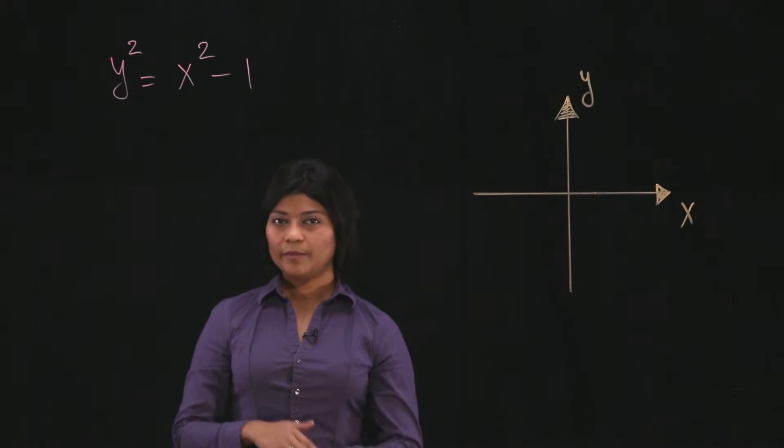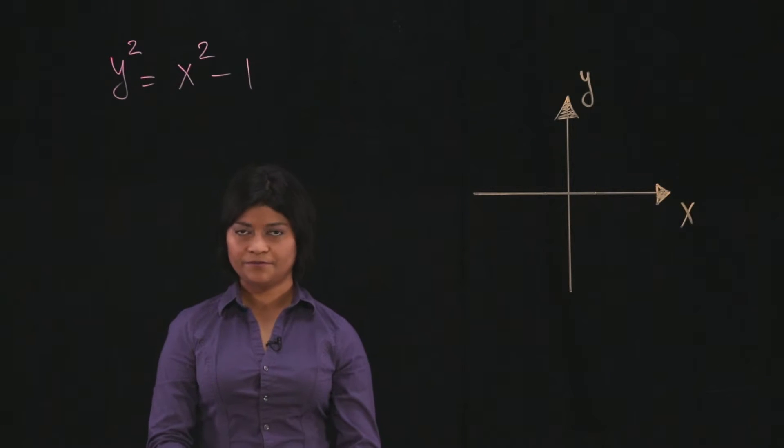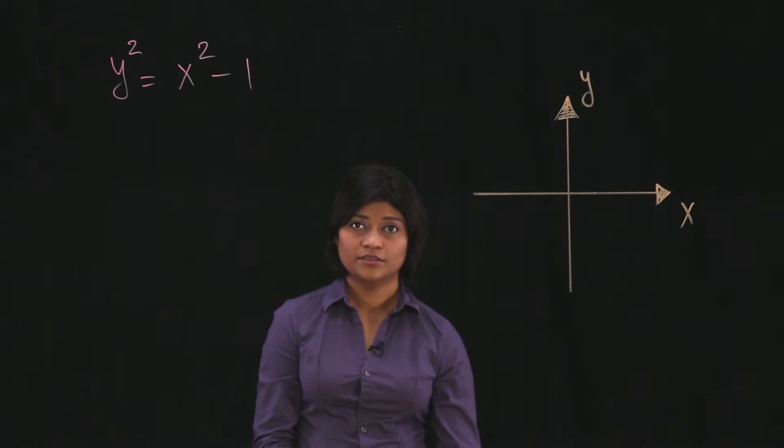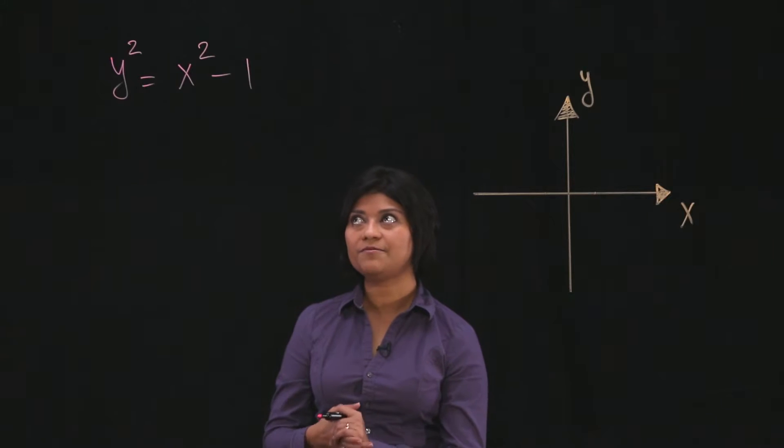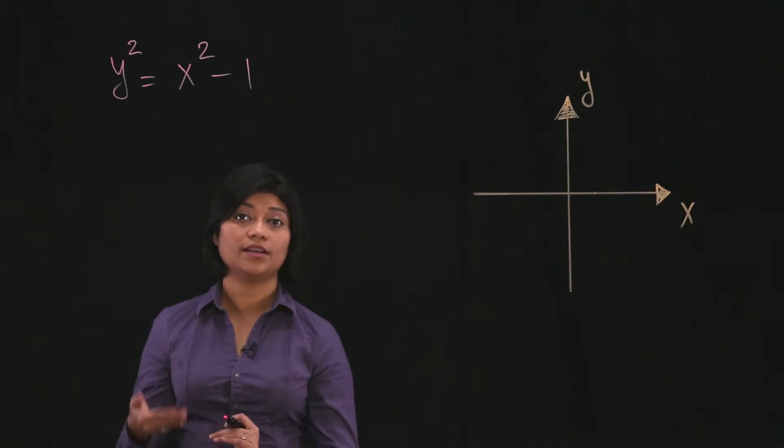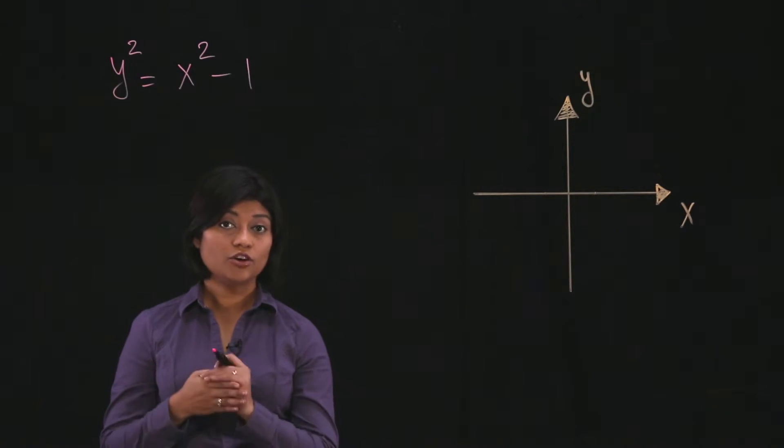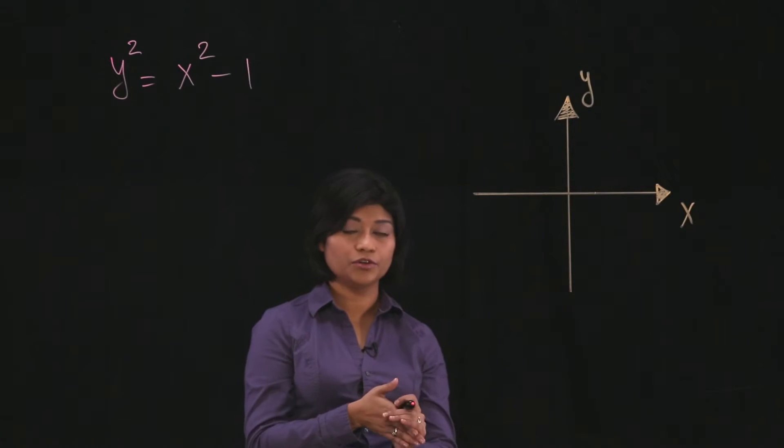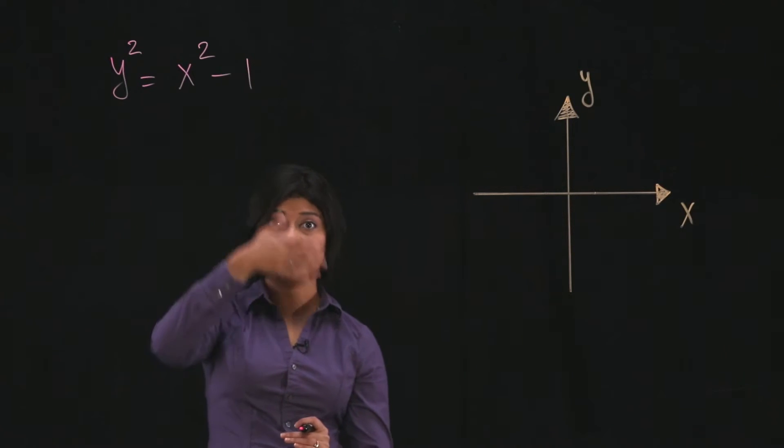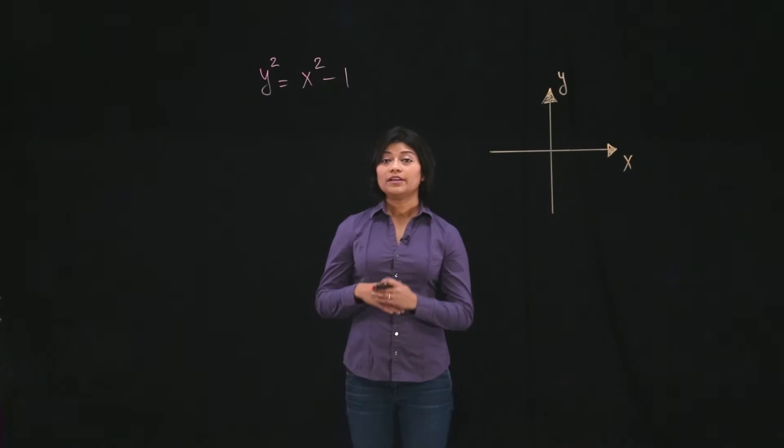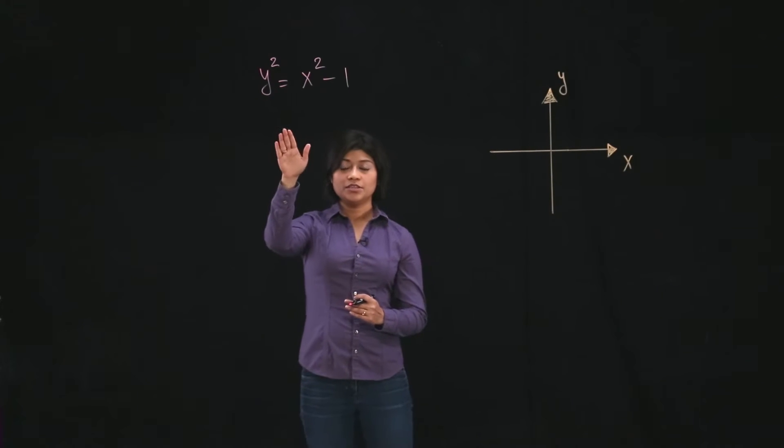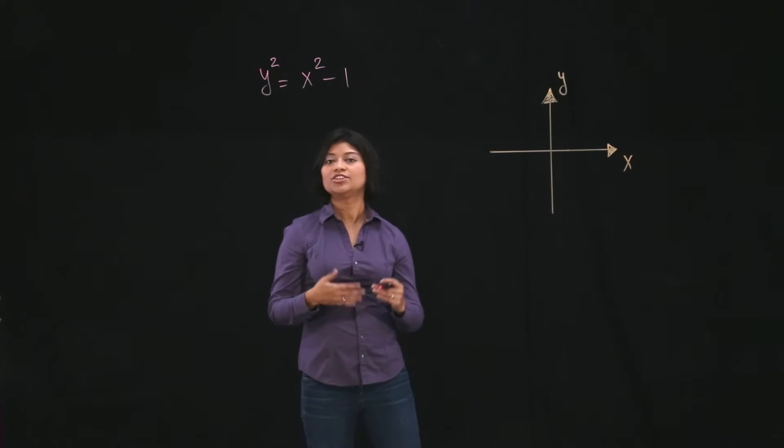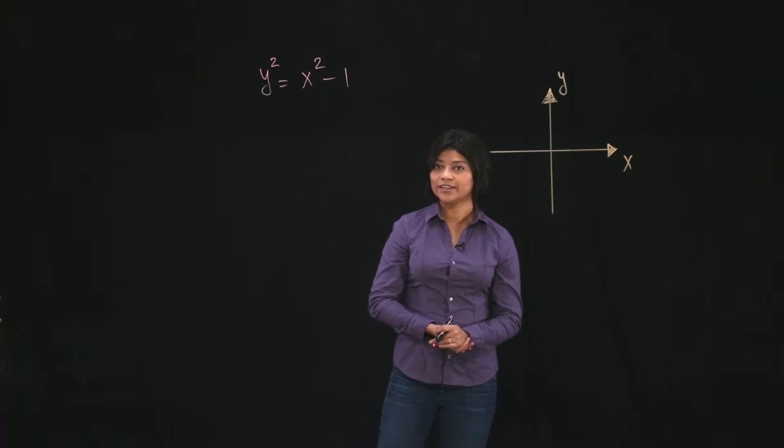So remember how we check if an equation represents a function. Well, one way to do it is see if it satisfies the vertical line test. And in order to check that, we first have to know what the graph of this equation will be. So let's graph this expression using any graphing utility and then check whether it satisfies the vertical line test.